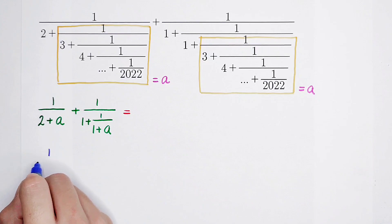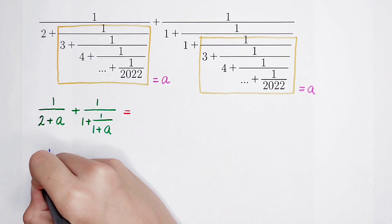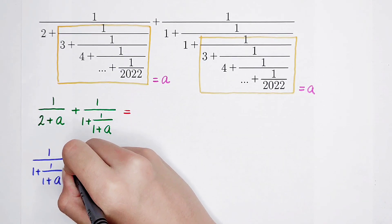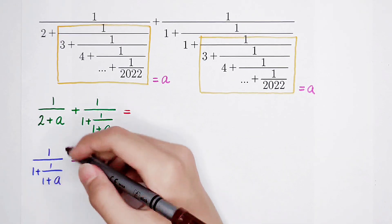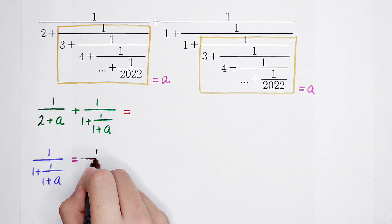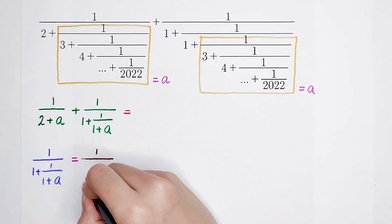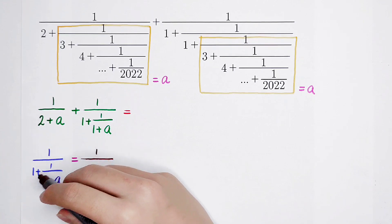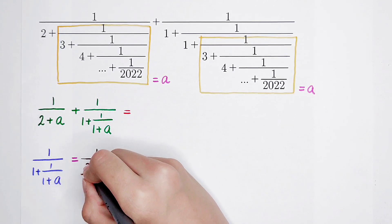Now we just calculate the second one. Simplify 1 over the 1 plus 1 over 1 plus a. This is the main fraction line. And it is equal to, it is, 1 plus a is the denominator.